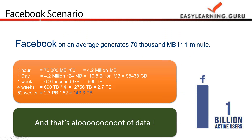Next is the Facebook scenario as a live example. With 1 billion active users, Facebook generates on average 70,000 MB of data in one minute. In one hour it generates 4.2 million megabytes. In one week it generates 690 terabytes, in four weeks 2.7 petabytes, and in 52 weeks it generates 143.3 petabytes. That is a huge amount of data — and that's what big data deals with.